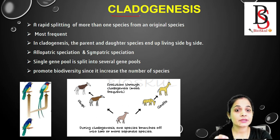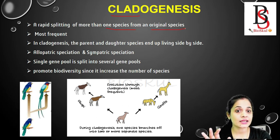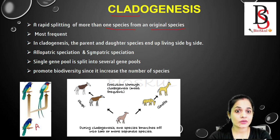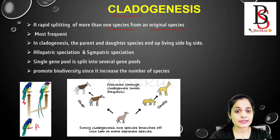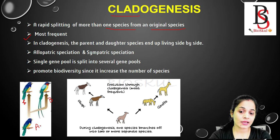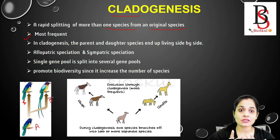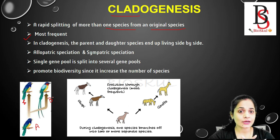The next pattern is cladogenesis — 'clados' means branch. It is the rapid splitting or branching of more than one species from an original species. Species A splits or branches into two different species. This pattern of evolution is most frequent in nature. In cladogenesis, species A is the parent species, and the resulting species are the daughter species — the parent and daughter species are living side by side.